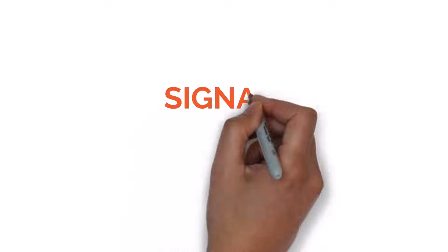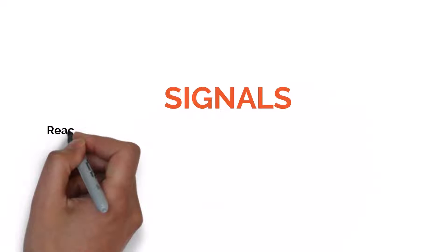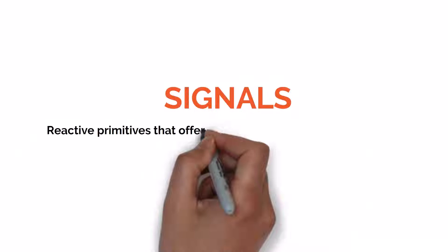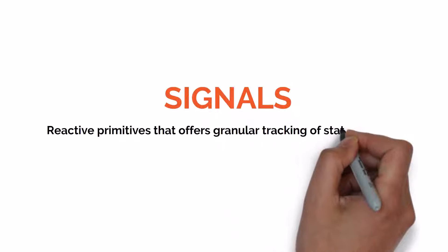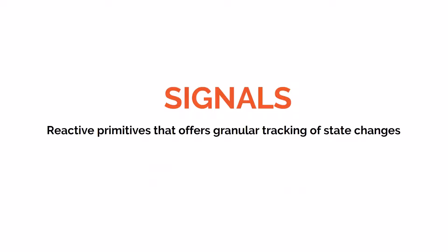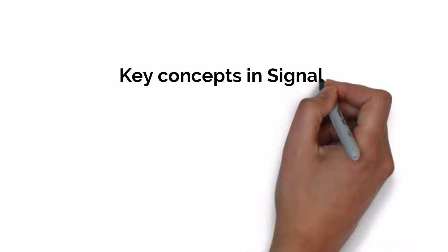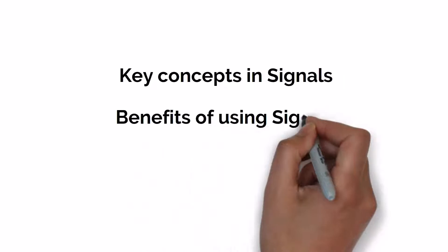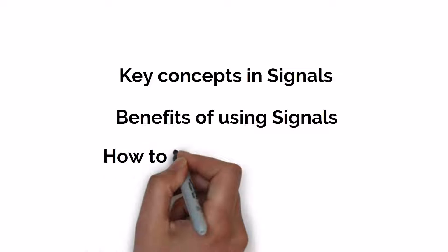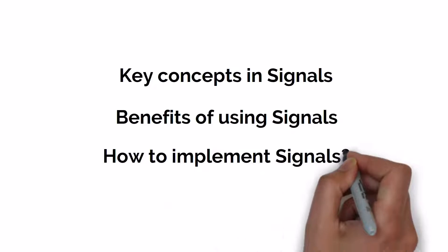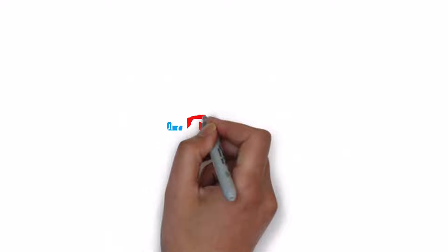In Angular 16, an exciting new feature has been introduced: Signals. Signals are reactive primitives that offer granular tracking of state changes within the application. Signals were introduced in Angular 16 and became stable in Angular 17. In this video I'm going to explain some of the key concepts in signals, benefits of using signals, and how to implement signals in an Angular application.